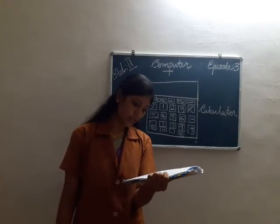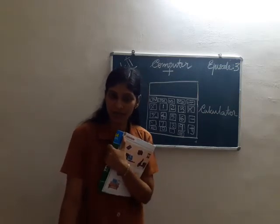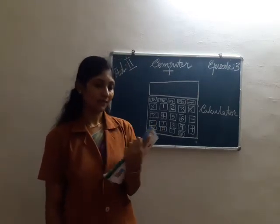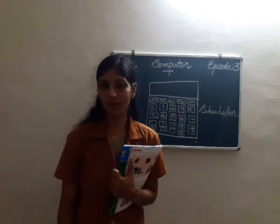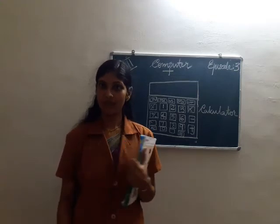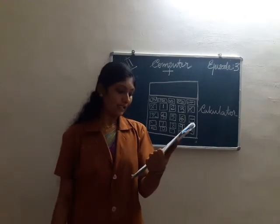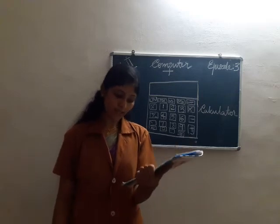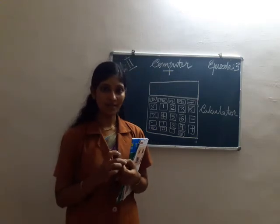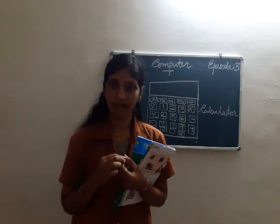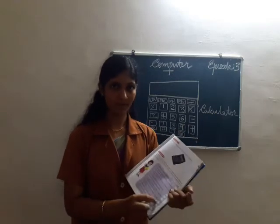Sixth question: you need two computers if you want to draw pictures and type letters. Do we need two computers? No — we can type letters and draw pictures in a single computer, so we do not need more than one computer. This question is wrong — put a cross mark in this box. Seventh question: automatic machines are faster than manual machines. Yes, automatic machines are faster than manual machines — put a tick mark in this box.